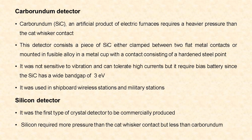Silicon carbide is called carborundum. This silicon carbide is an artificial product of electric furnaces, and it requires a heavier pressure than the cat whisker contact. The carborundum detector consists of a piece of silicon carbide which was either clamped between two flat metal contacts, or mounted in a fusible alloy in a metal cup with a contact consisting of a hardened steel point pressed firmly against it with a spring.